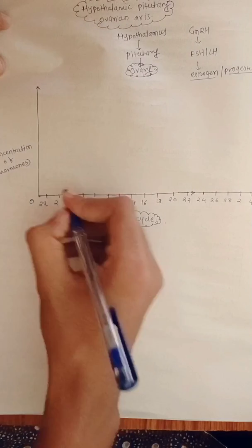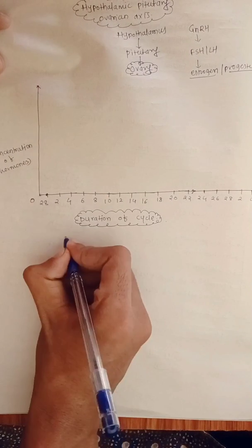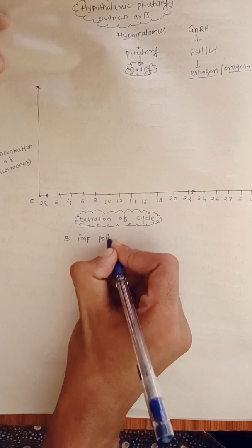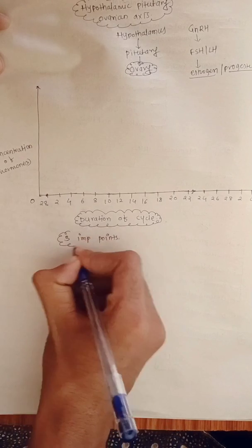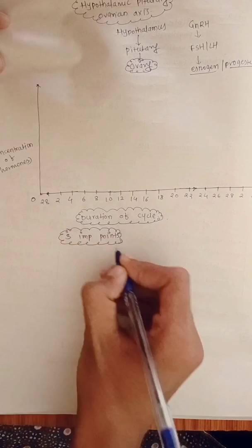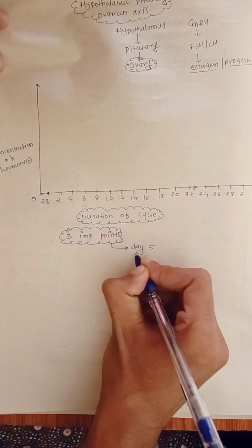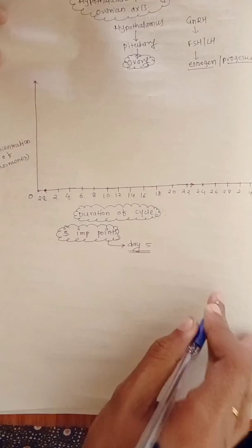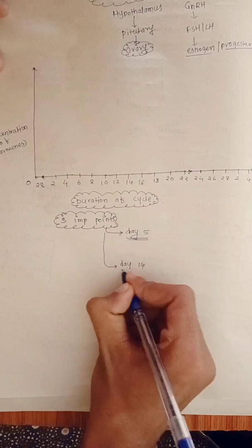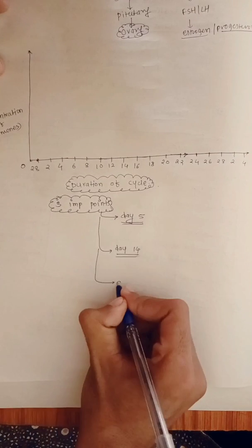When we draw the chart, three important days need to be remembered. First is day five, next is day fourteen — we know the importance of day fourteen, that is the LH surge and ovulation — and day twenty-five.